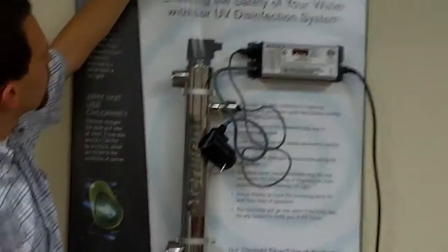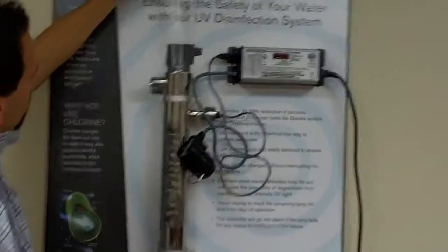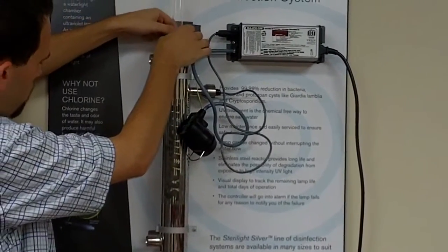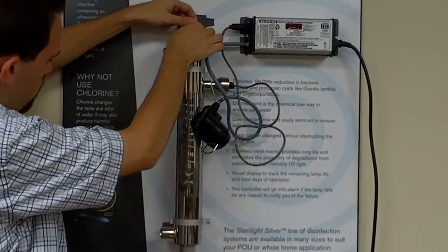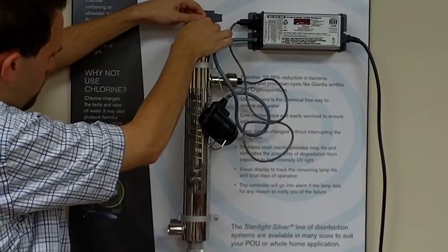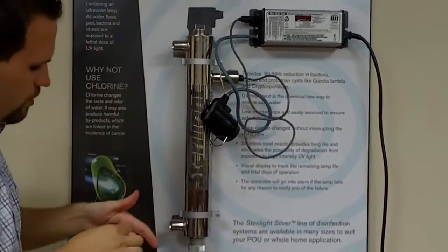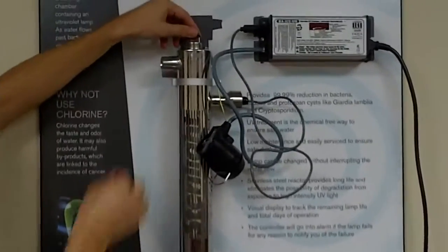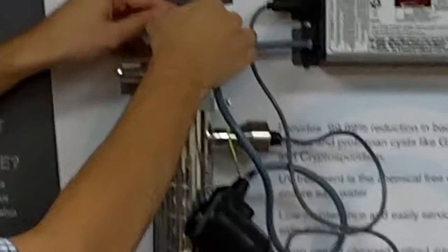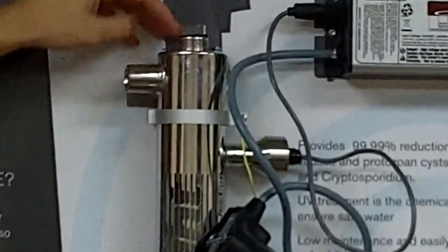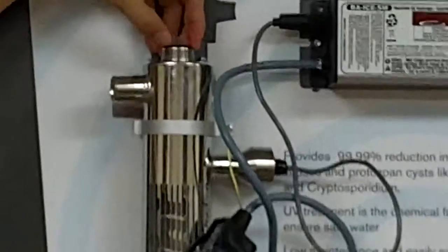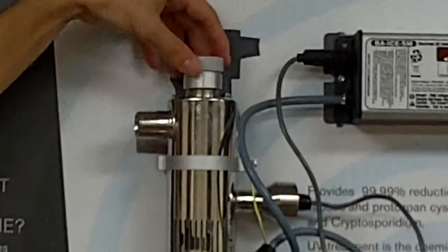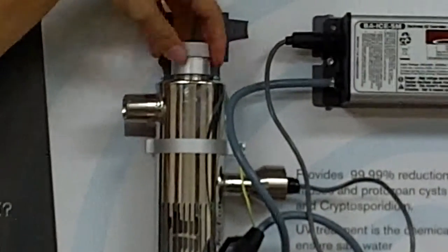So we'll just start by inserting the sleeve into the chamber there. Just like so. Put the first o-ring on the top. You just want to push that o-ring all the way down so it seats right against that metal there. And then we'll put the bolt on there to keep everything intact.